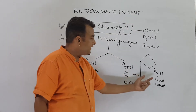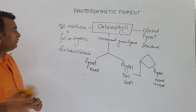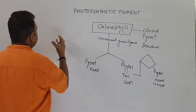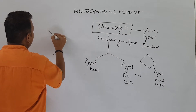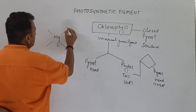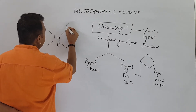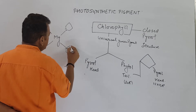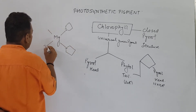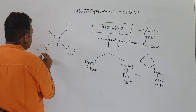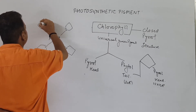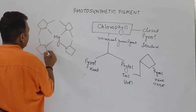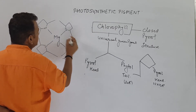So the chlorophyll molecule has a phytol tail and a pyrrole head. I can explain this with the haemoglobin-like structure. The central element in the chlorophyll molecule is magnesium, and this magnesium is always attached with four tetrapyrrole rings. The pyrrole rings are always attached with each other with the help of methane bridges.